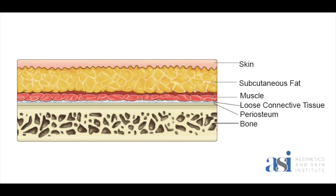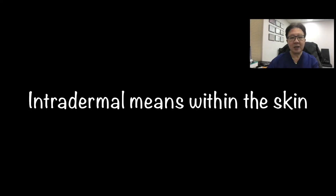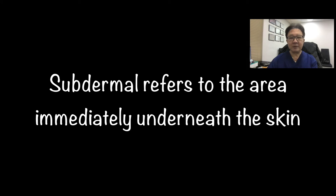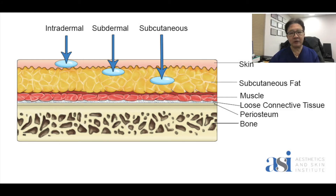For now, ignore the muscles, because in certain areas of the face the muscles can be in different planes. Looking at the fat and the skin, this diagram represents the intradermal, subdermal, and subcutaneous layers. Intradermal refers to injections within the skin; subdermal refers to the area immediately underneath the skin, just below the dermis. Underneath the skin is subcutaneous fat. When we inject subdermal, this is actually the top part of the subcutaneous fat.